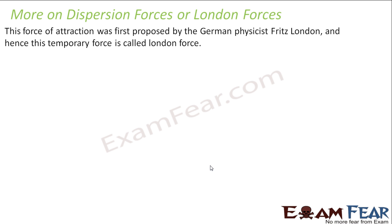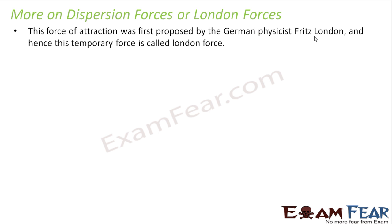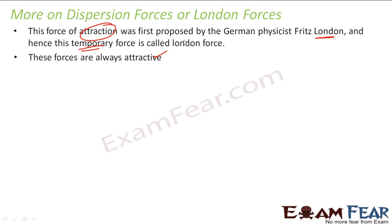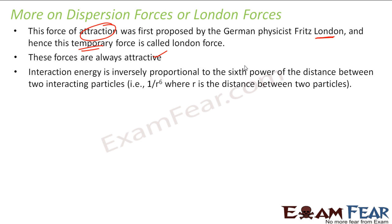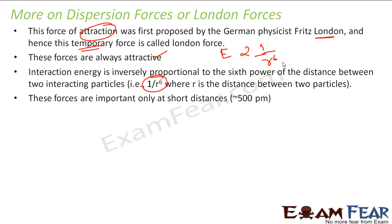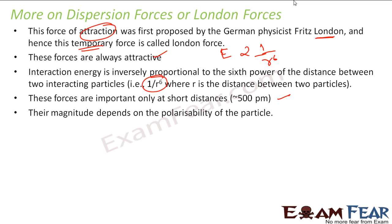The dispersion force was proposed by the German physicist London, and that is how the name came. It is a temporary force and is always a force of attraction. The interaction energy is inversely proportional to the 6th power of the distance between two interacting particles — energy is proportional to 1/R⁶, where R is the distance. These forces are important only at short distances.